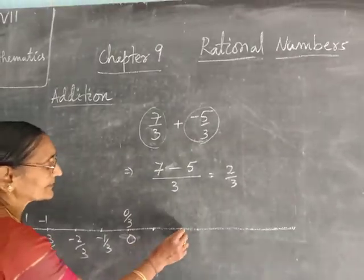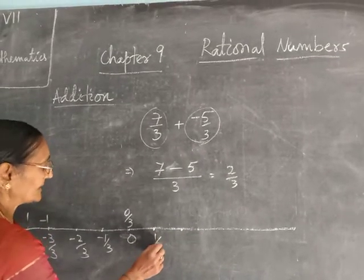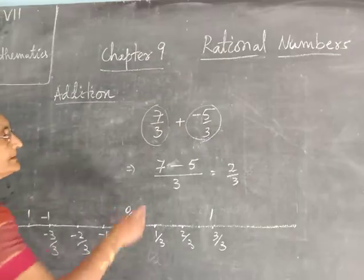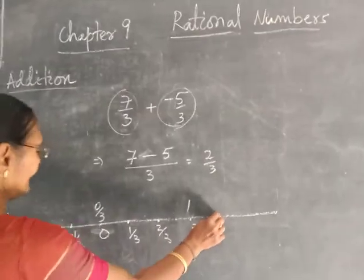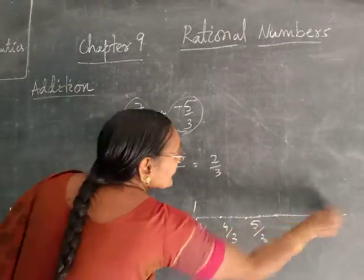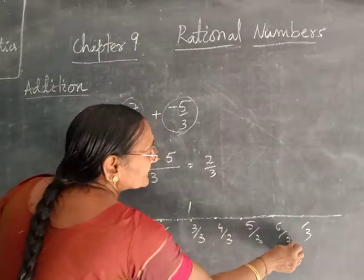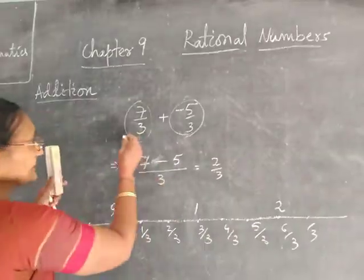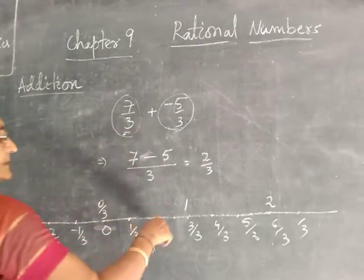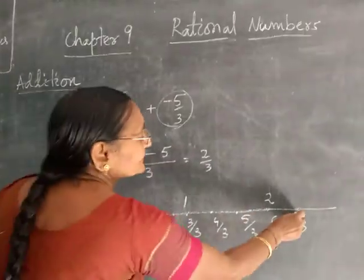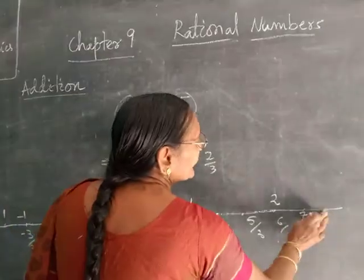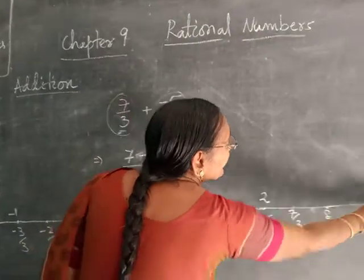Then come to the right side where positive numbers are there. At equal distance: 1 by 3, 2 by 3, 4 by 3, 5 by 3, 6 by 3, then 7 by 3. 6 by 3 means 2. So these two numbers are between these points. 7 by 3 is between positive 2 and positive 3 — that is between 8 by 3 and 9 by 3.